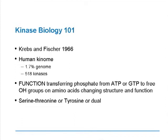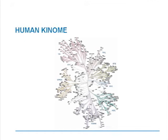The sum total of kinases within our genetic makeup we now refer to as the kinome. It represents 1.7% of the genome, and at the present time, we know of 518 distinct kinases. The function is to transfer a phosphate group from ATP or GTP to a hydroxyl group on an amino acid, which results in changing structure and function. The amino acids that are primarily phosphorylated are either serine, threonine, or tyrosine. Some kinases will phosphorylate all of these, and they are known as dual-acting kinases.